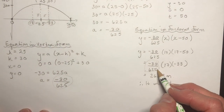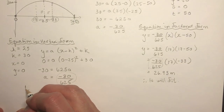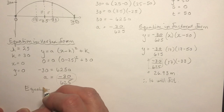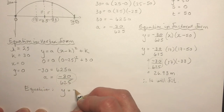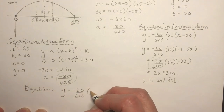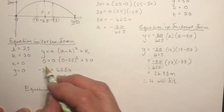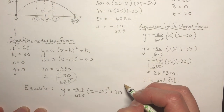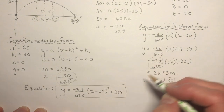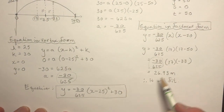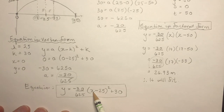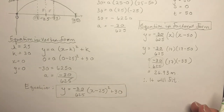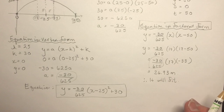For the vertex form, using h equals 25, k equals 30, and the point (0, 0): 0 equals a times (0 minus 25) squared plus 30, giving negative 30 equals 625a, so a equals negative 30 over 625 — the same value. The equation in vertex form is y equals (negative 30/625) times (x minus 25) squared plus 30. Both forms give the same a value. I hope that helps with bridges and tunnels questions — we'll do more types of questions in the next videos.